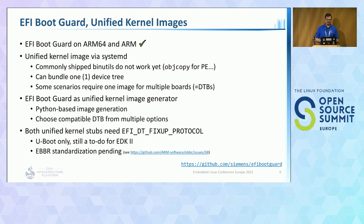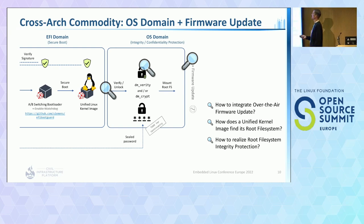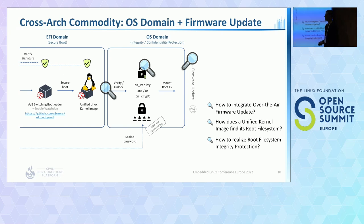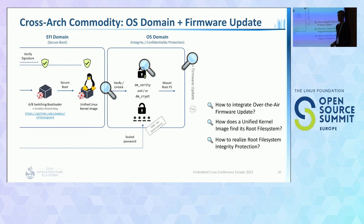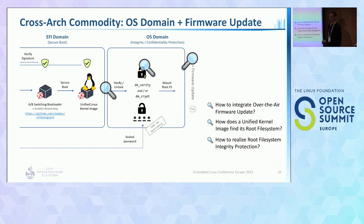With that we leave the UEFI domain and I hand over to Christian. So now what do we actually have? We have cross-architecture commodity in the EFI domain, meaning you deploy the very same components across architectures with maybe minor configuration differences such as enabling watchdogs. Moving to the OS domain, I want to focus on three things: how the unified kernel image finds and mounts its rootfs, how to integrate integrity protection, and firmware update.